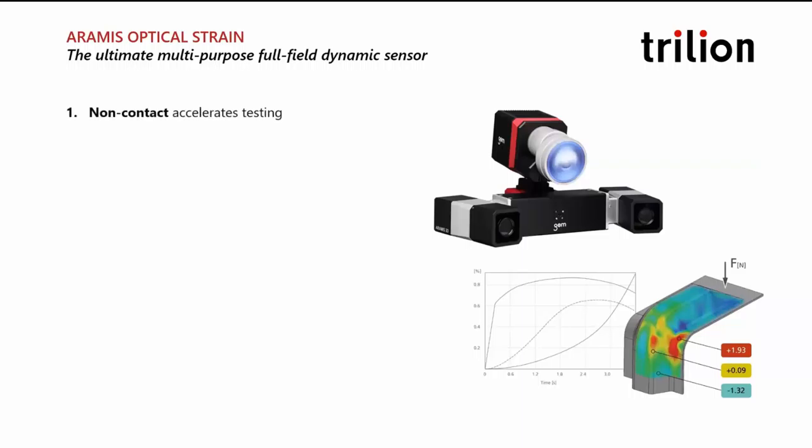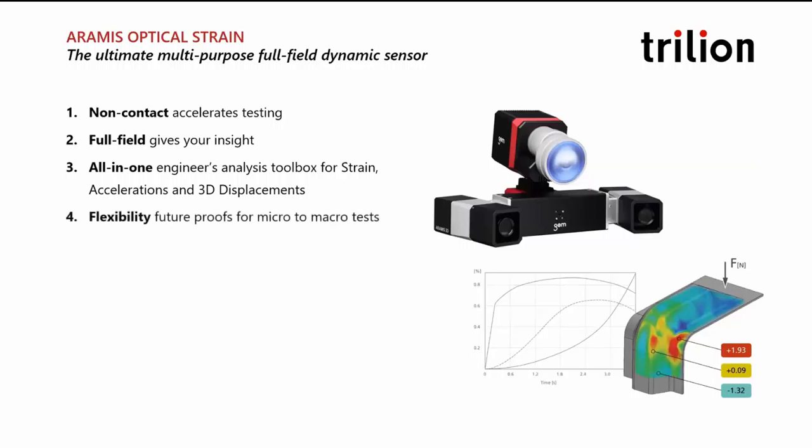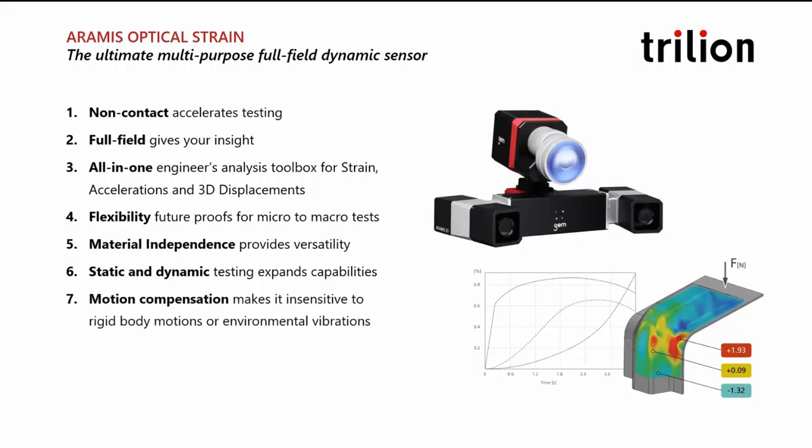These examples show that ARAMIS is the ultimate multi-purpose full-field dynamic sensor. Its non-contact capabilities help expedite measurement setup and accelerate test schedules. Its full-field data lets you gain insight into global and local behaviors. All-in-one measurement solutions provide 3D coordinates, displacements, and strain fields. The flexibility of the technology future proofs it for micro to macro scale measurements. Material independence provides versatility, and it's designed to adapt to your evolving needs with motion compensation.